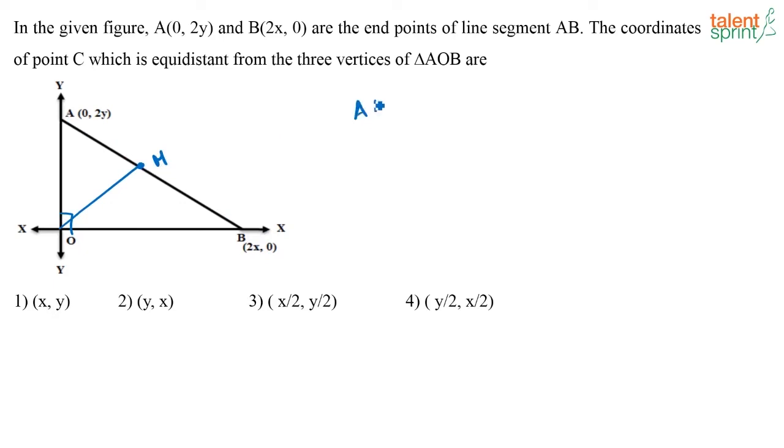So here I can say AM is equal to BM is equal to MO. This is what they are saying. All the vertices should be equidistant from that point. That point will be nothing but the midpoint of the hypotenuse because this is a right-angled triangle.